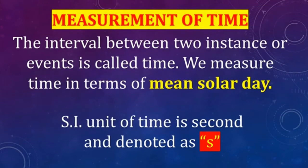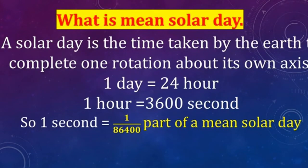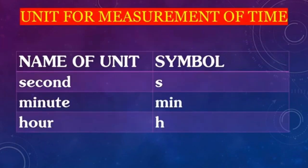Next is measurement of time. The interval between two instants or events is called time. We measure time in terms of the mean solar day. The SI unit of time is second, denoted as s. A solar day is defined as the time taken by the Earth to complete one full rotation around its own axis — that is one day, equal to 24 hours. One hour equals 3600 seconds, so one second equals 1/86400 of a mean solar day.